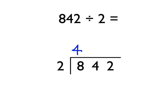Now, how many times does the 2 go into this 4? Well, it goes in twice — 2 times 2 is 4. And then, to finish off, we ask ourselves: how many times does 2 go into this 2? Well, it goes in just once. So the answer to this one is 421.